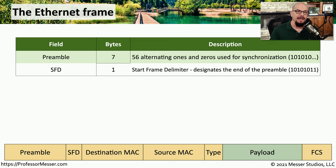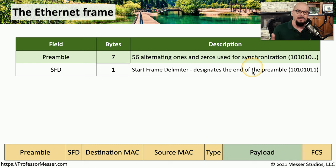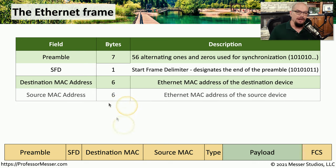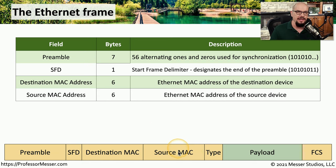Next, we have the beginning of the frame called the start frame delimiter. It's one byte long, and this designates that the preamble is over and we're now ready to begin the main part of the ethernet frame. The first real ethernet data we'll see in this frame is the six-byte destination MAC address. This is the destination for the data contained within this ethernet frame. Right after that destination MAC address is the source MAC address, also a six-byte field. Both of those together determine where the traffic is going and where it originated from.